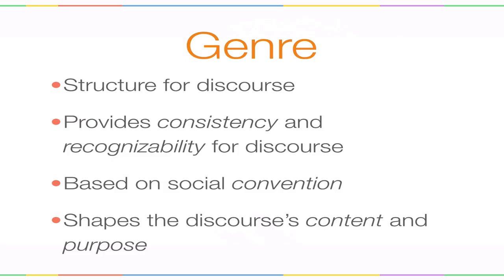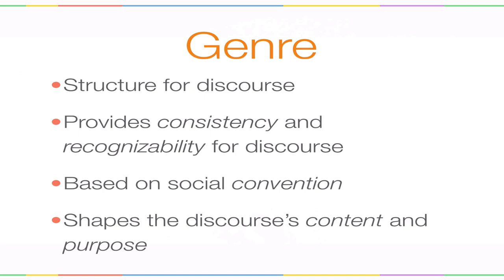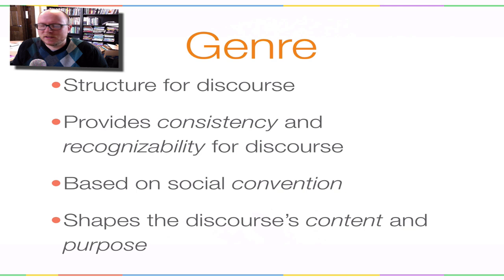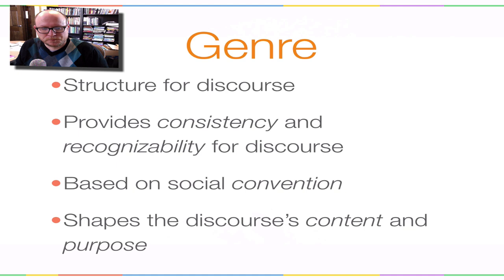Now, in thinking through this ghost tour, we want to think first about its genre, which is one of the main topics for today. In any piece of discourse, you're usually dealing with some kind of genre. A genre is a kind of structure for discourse — it provides the consistency and recognizability for discourse. There are lots and lots of different types of genres, things like a sermon, a lecture, or ordering at a drive-thru. There's a kind of consistency and recognizability to those pieces of discourse that structures what's going on, and it's based on social convention.